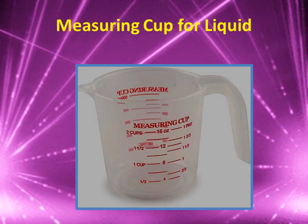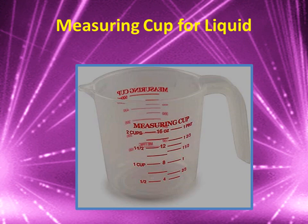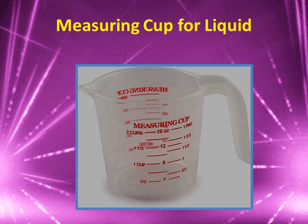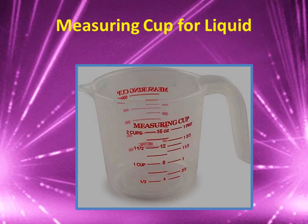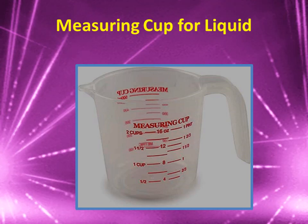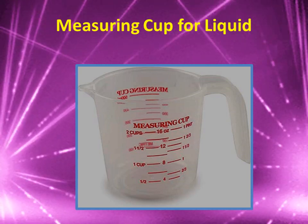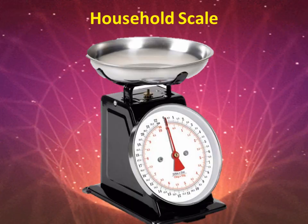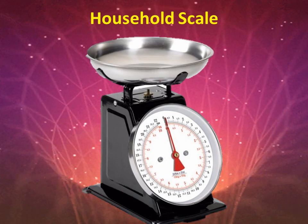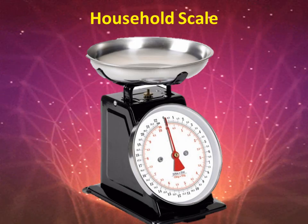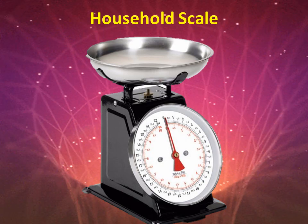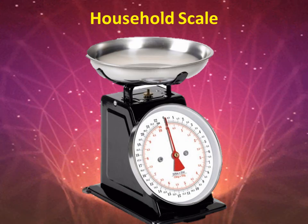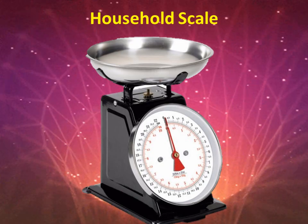Next we have a measuring cup for liquid. Those are commonly made of heat-proof glass and are transparent so that liquid can be seen. It has different labels — from one-half cup, one cup, one and one-half up to two cups. Next, household scales are used to weigh large quantities of ingredients like rice, flour, sugar, legumes, vegetables, and meat — up to 25 pounds or 50 pounds.